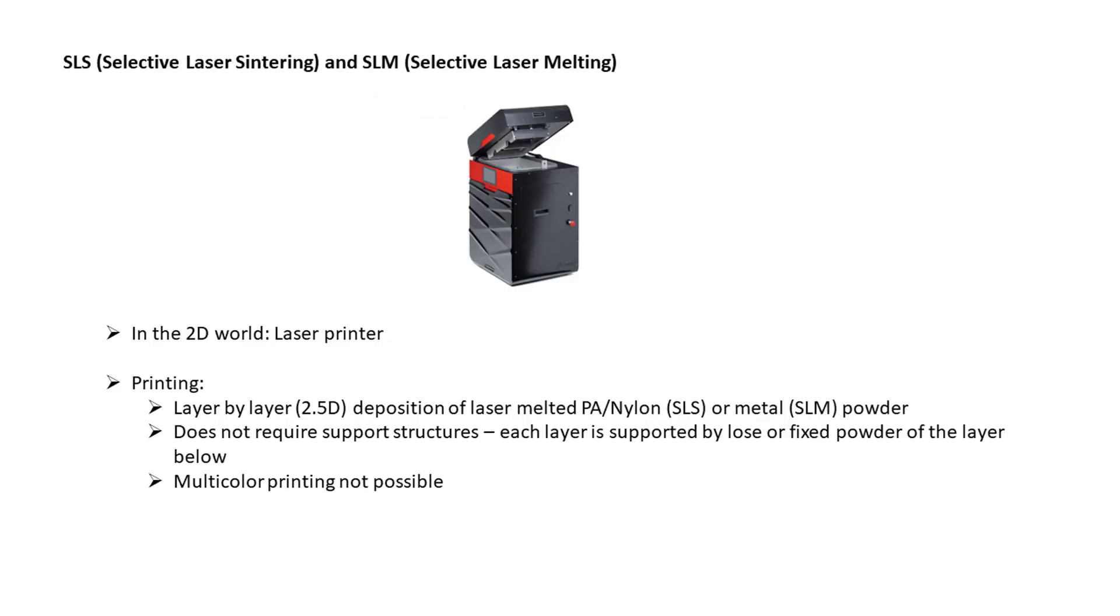Where you have an inkjet printer you also have a laser printer. At least it's something with powder and laser, the remaining concept is different. The material is applied layer by layer, 2.5D. Selective laser sintering uses plastic powders like polyamide known as nylon. And selective laser melting can even use metals. As the non-melted powder from the previous layer can act as a support, no support structures are required. Multicolor printing is not possible.